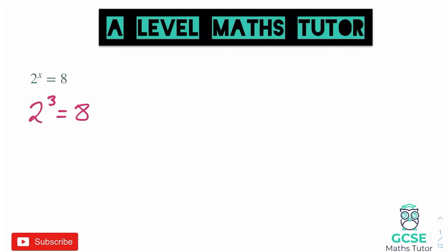When it comes to logarithms, there is another way of writing this. Just like when we're looking at these powers, we know that this number, this 2, is called the base number, and that's going to apply when we look at a logarithm. What we say for a logarithm — and this means exactly the same thing, it's just a different way of writing it — we're going to say log with a base of 2. So log base 2 of 8 — what power of 2 gives us the answer 8? And we know that the answer is 3.